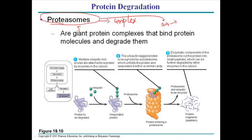Some proteins become non-functional or are no longer needed by the cell, and they are directed to the proteasome complex. To be admitted into the proteasome, these proteins need to be marked. They are marked with small proteins called ubiquitin, which attach to the protein that has to be degraded, forming a polyubiquitin chain.